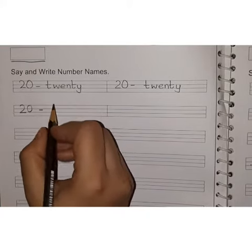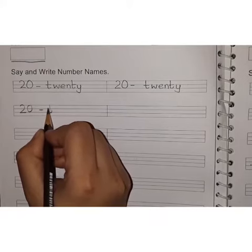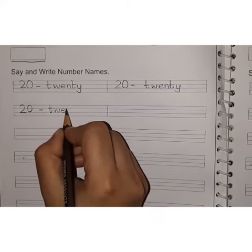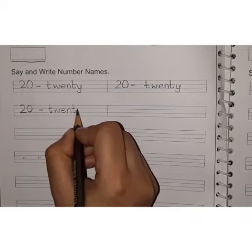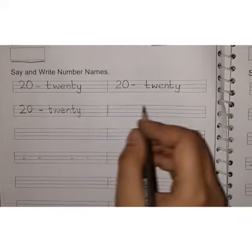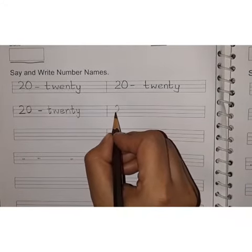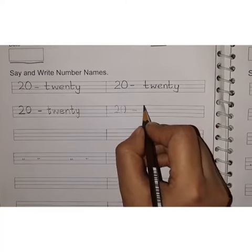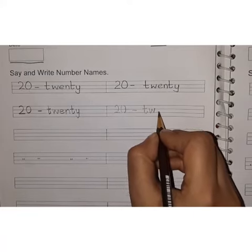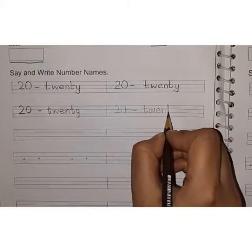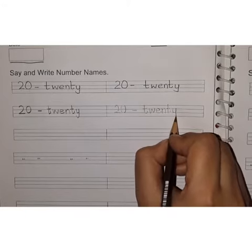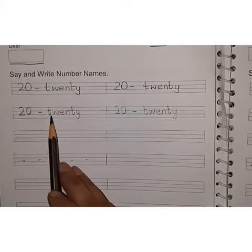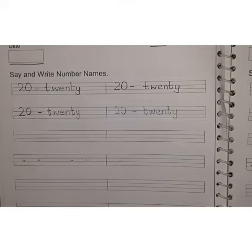Dash. Then start from the first line: T. Then touch the two lines and write W-E-N-T-Y, 20. Okay, look here one more time. 2, 0, 20. And the spelling is T-W-E-N-T-Y, 20.